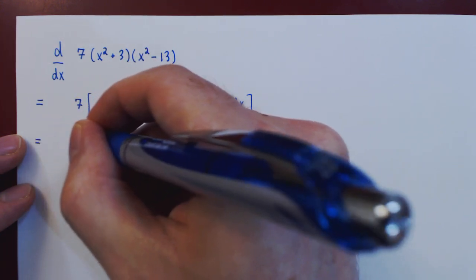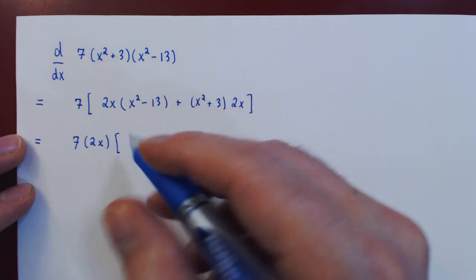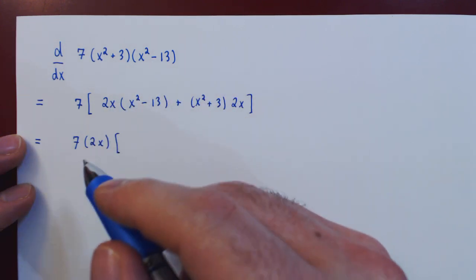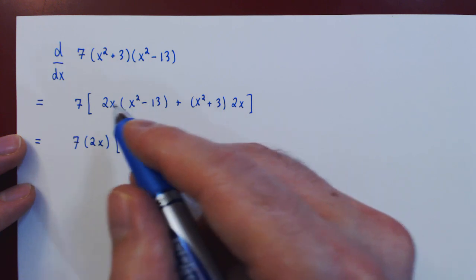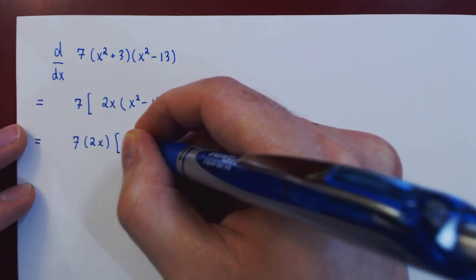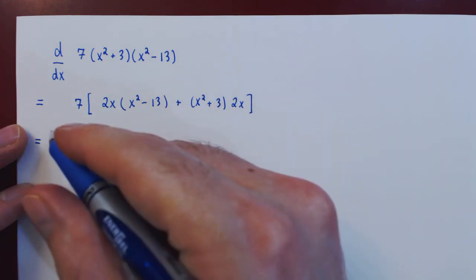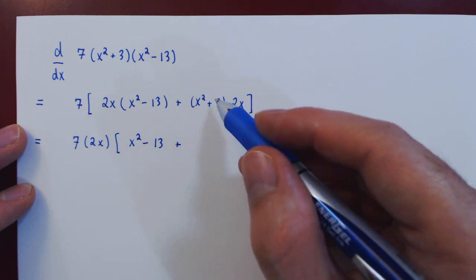So we will have seven times 2x, and then after 2x has been factored out, in the first term we're left with x squared minus 13, then plus, again this was factored out, and so we're left with x squared plus 3. The factoring is done for now.